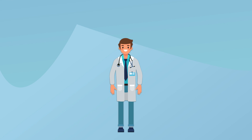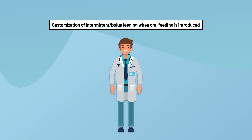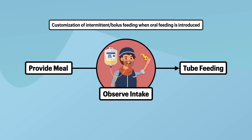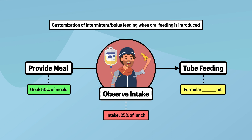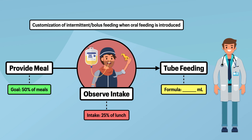Coming to the end, I want to touch upon three relevant concepts. The first concerns the customization of intermittent or bolus feeding when oral feeding is introduced. One option is to provide a meal, observe the intake, and then provide tube feeding directly after it, with the volume adjusted to account for whatever the patient couldn't eat. For instance, if the goal is for the patient to eat at least 50% of all meals but they only consume 25% at lunch, it will trigger a bolus of a set volume of formula to make up for the deficit. While this concept makes the most sense in theory and is suitable for the home or long-term care setting, it hasn't had much success in the acute inpatient setting, primarily due to confusion over the protocol among nursing staff.